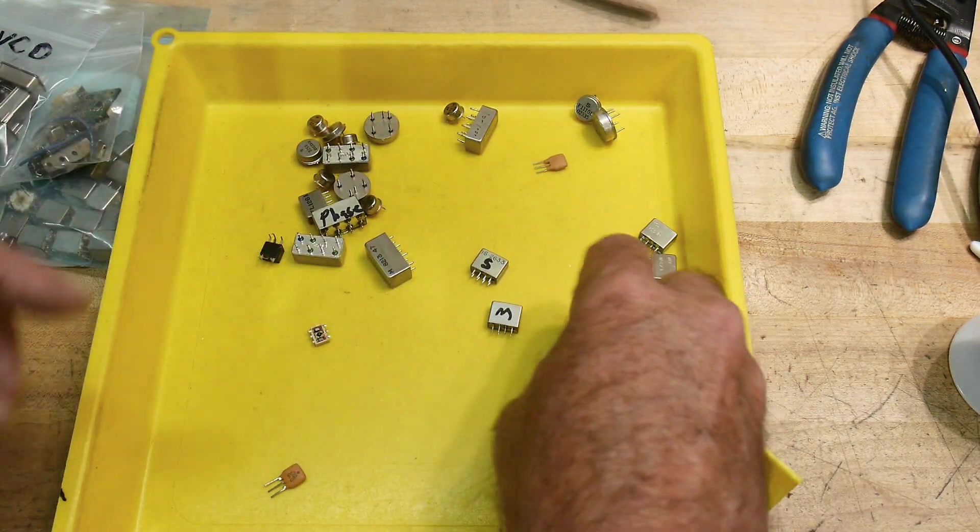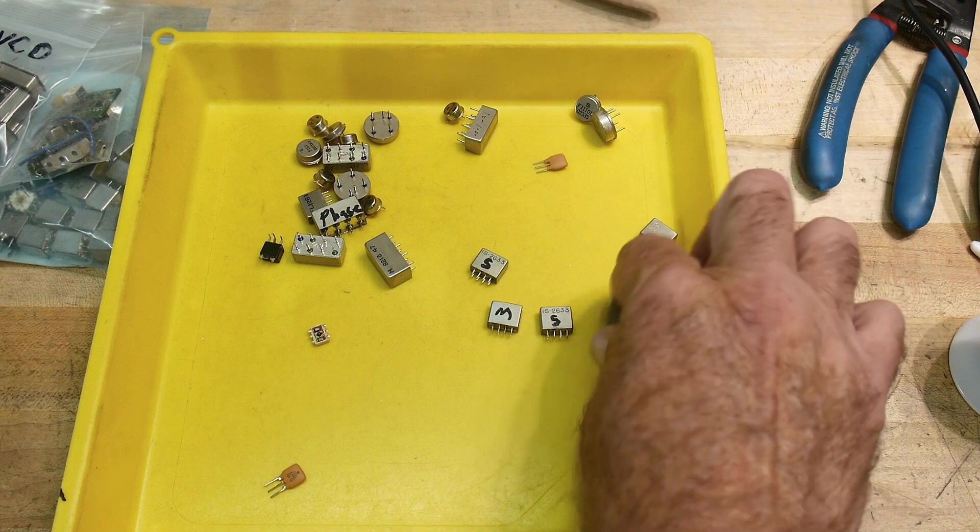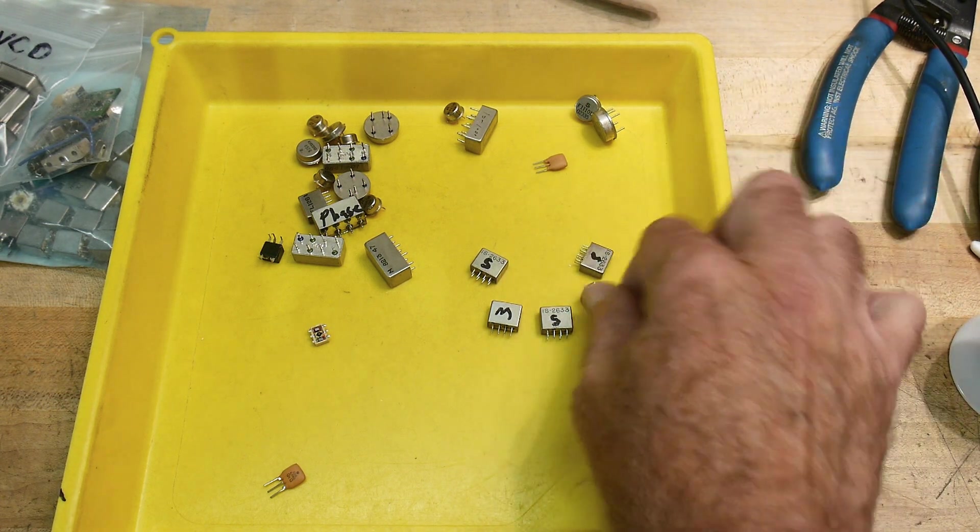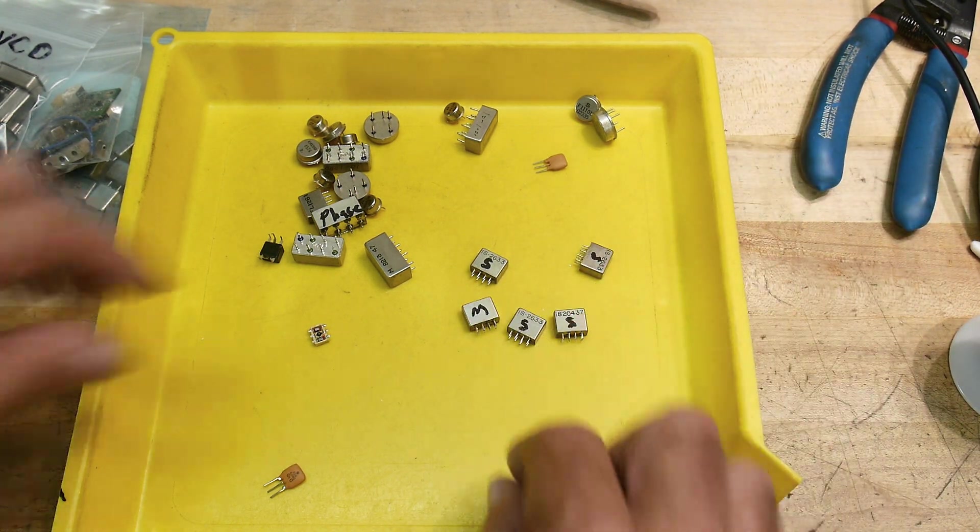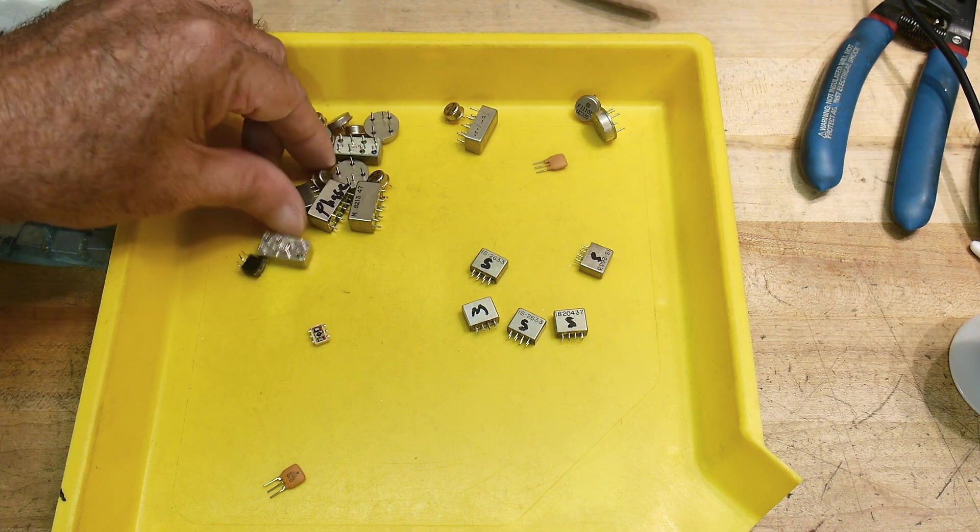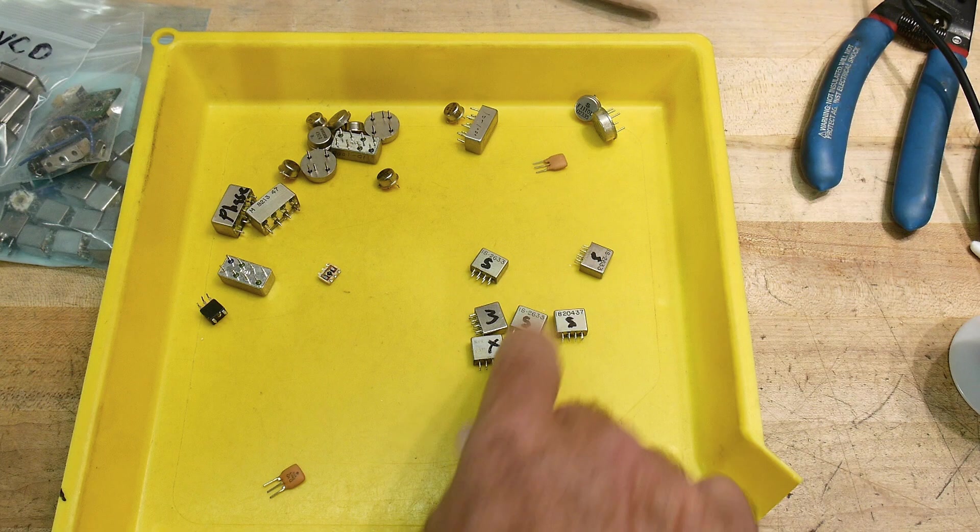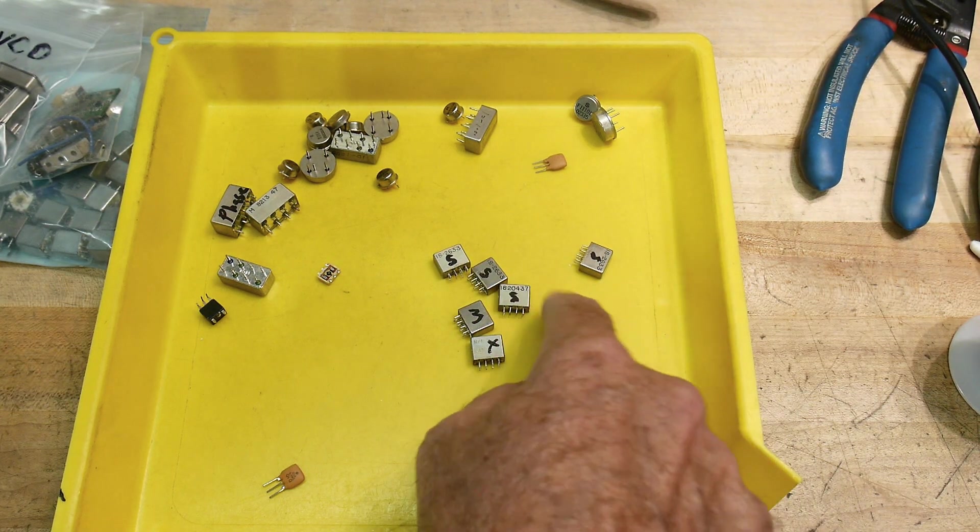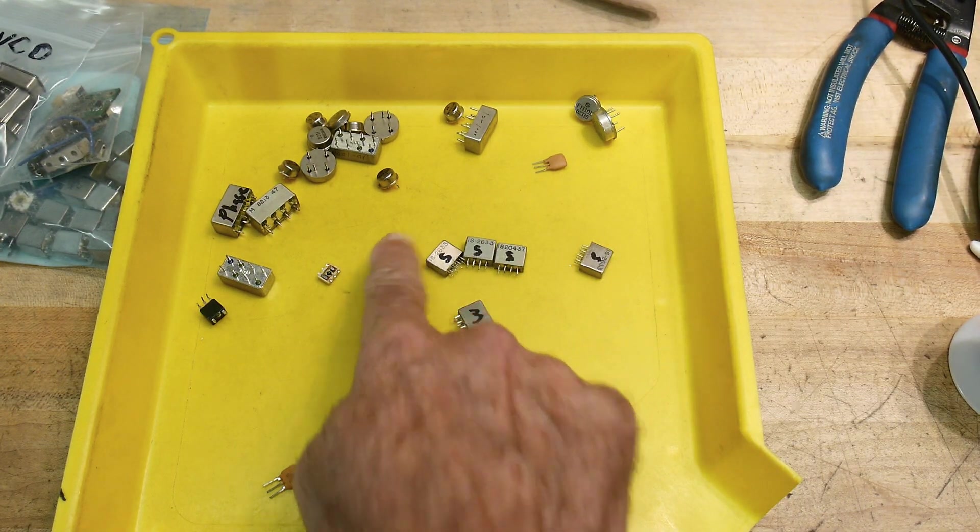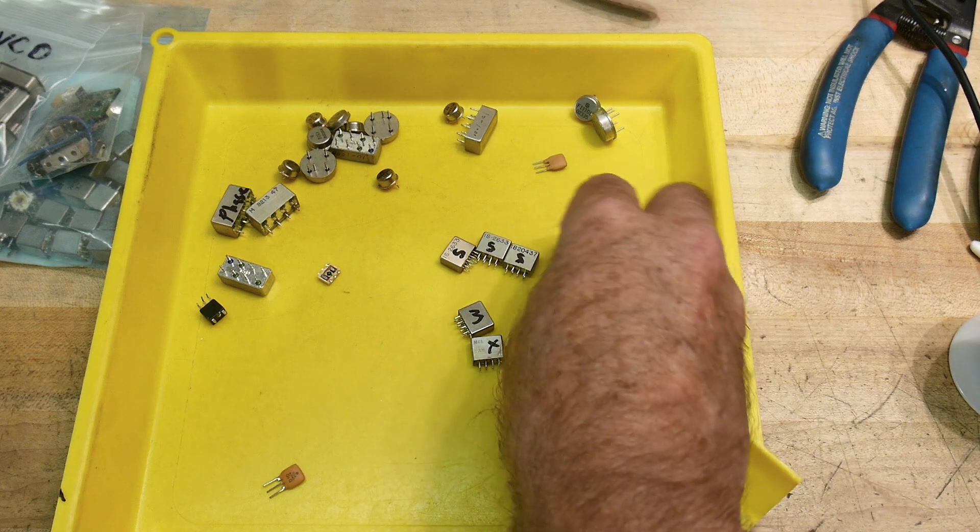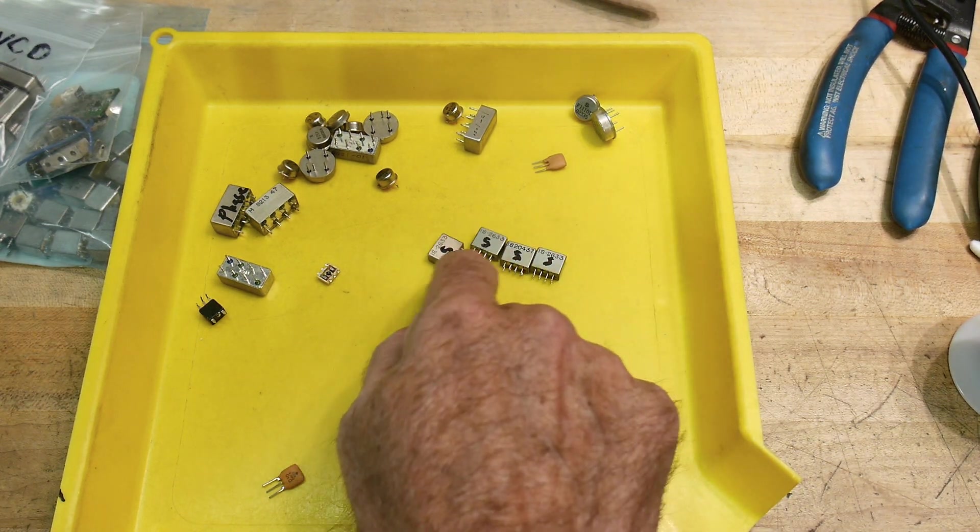And I've decoded them once before, and I wrote on them so I know what they are. So let's see, what do the codes mean, okay, all right, so S means splitter. So these are splitter combiners, okay, got a bunch of those. Those are nice, all right.